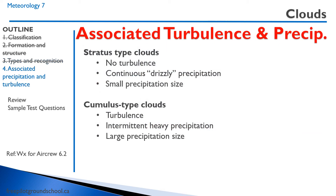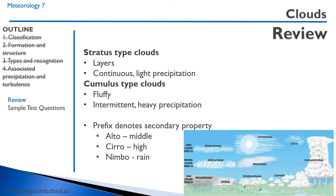Let's discuss the associated turbulence and precipitation with clouds. Stratus clouds have almost no turbulence but continuous drizzly precipitation with small precipitation size. Cumulus-type clouds are associated with turbulence, intermittent heavy precipitation, and large precipitation size — caused by the unstable air mass with lots of updrafts that suspend water droplets and allow them to grow in size. The prefix on the cloud type denotes secondary properties: alto is middle, cirro is high, nimbo is rain.